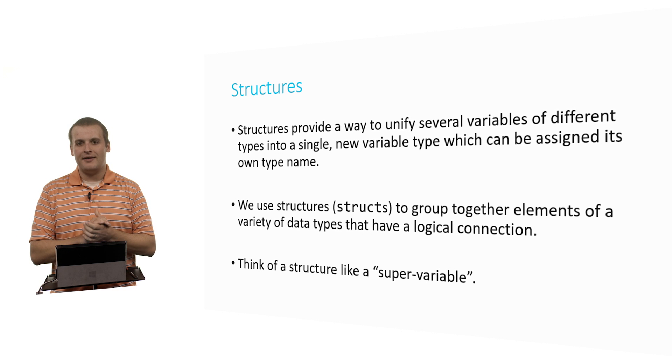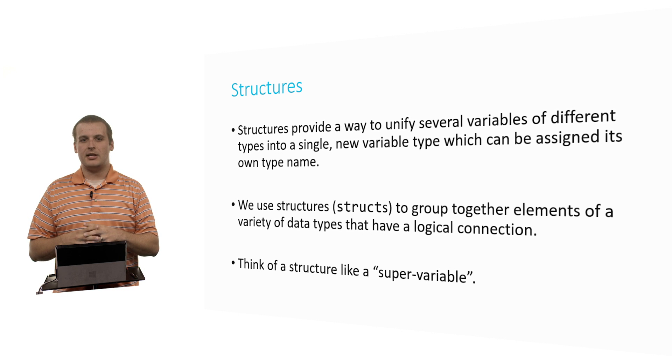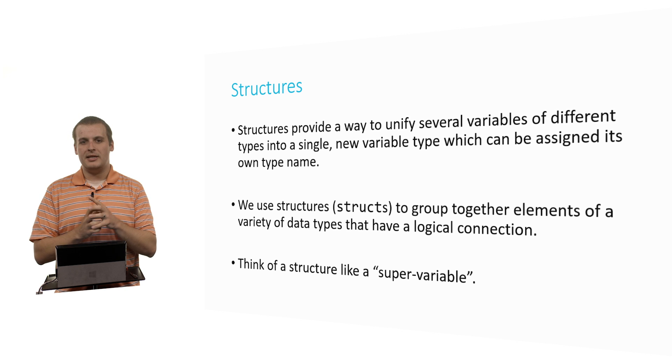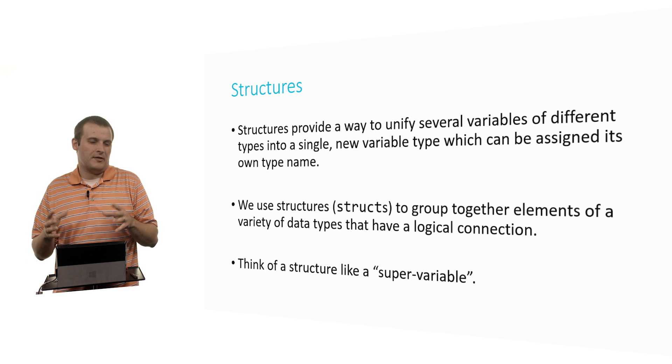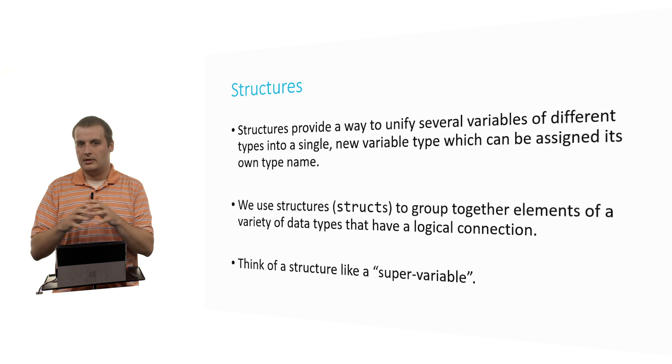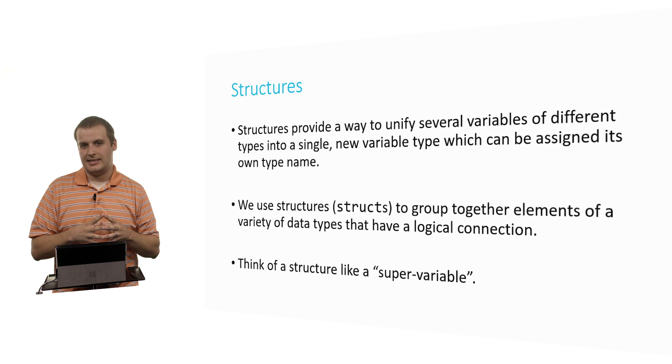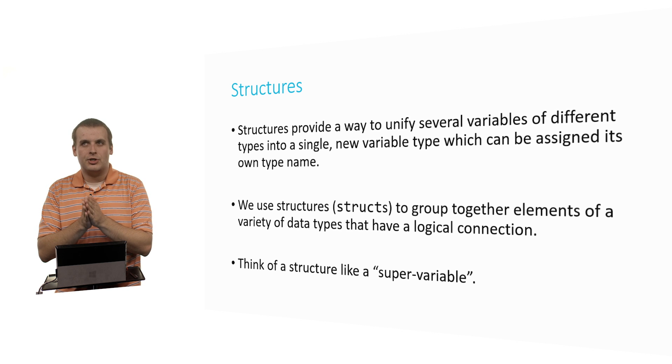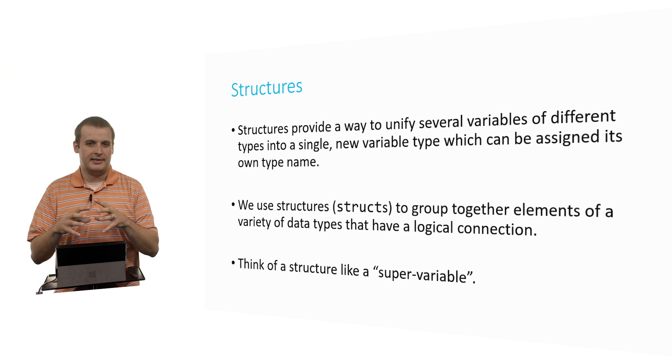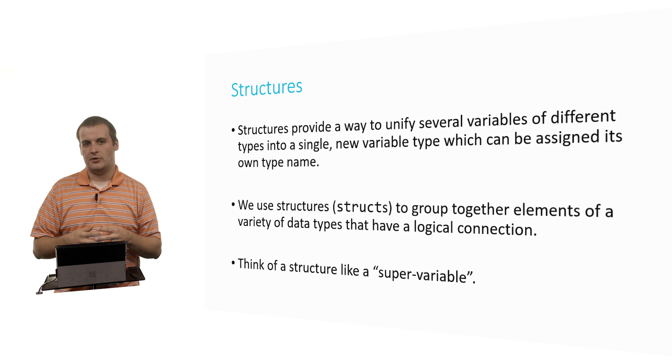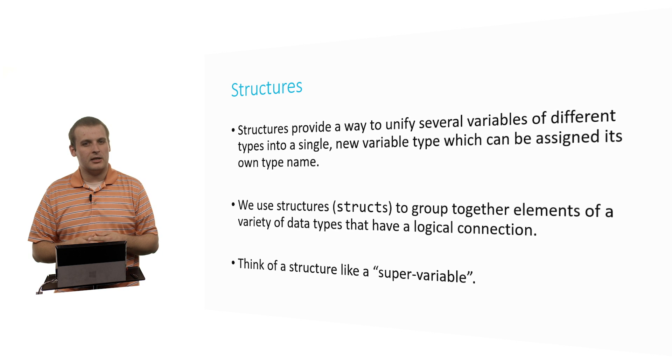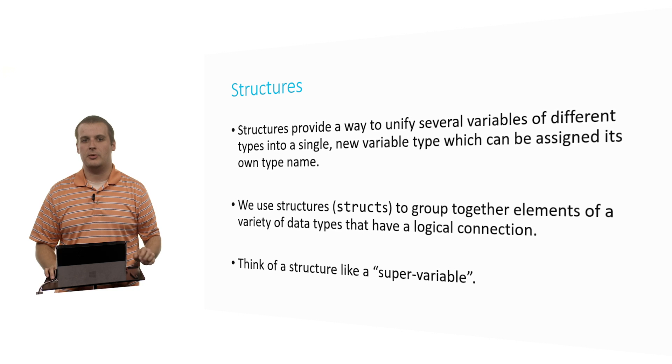We can do so by using structures. Structures allow us to unify variables of different types into a single new variable type, which we can assign its own type name. This is really strong because we can now group elements of different data types together that have a logical connection. We've been able to do this with arrays, grouping variables of the same data type together. But we haven't been able to mix up different data types together. We can't pair an integer and a character and a double all in the same thing and call that a single unit. But with structures, or frequently referred to as structs, we actually can. So a structure is sort of like a super variable. It's a variable that contains other variables inside of it.